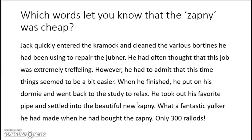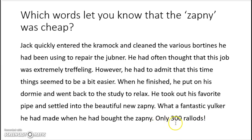Which words let you know that the zapni was cheap? We start with the beautiful new zapni. What a fantastic yelker he had made when he had bought the zapni. So maybe we can see that it's a fantastic yelker — something good. We don't even know what a yelker is but it's something good. Then we read on and see it says only 300 ralads. If the word only comes before a number, we can guess that maybe this zapni was cheap. Maybe ralads are some kind of money.